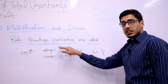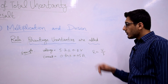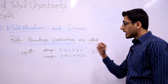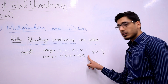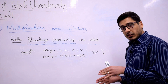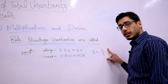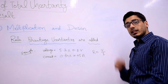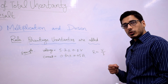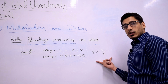The rule says that percentage uncertainties are added. So what you are going to do is calculate the percentage uncertainty for voltage, calculate the percentage uncertainty for current, add those percentage uncertainties to get the percentage uncertainty in the value of resistance, and then convert that percentage uncertainty back to absolute uncertainty to get your final result for resistance.